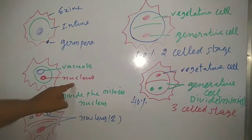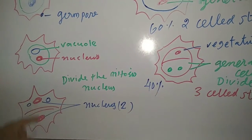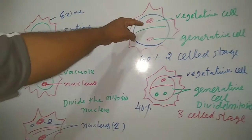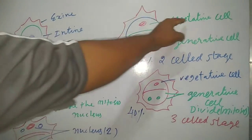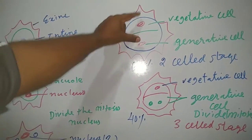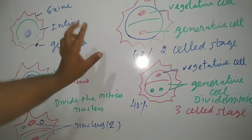Next the nucleus is going to divide in two. They divide by mitosis cell division. The nucleus divides to form two nuclei. Understand clearly, the two nuclei. The upper part of the nucleus is known as a vegetative cell, the lower part of the nucleus is called a generative cell.